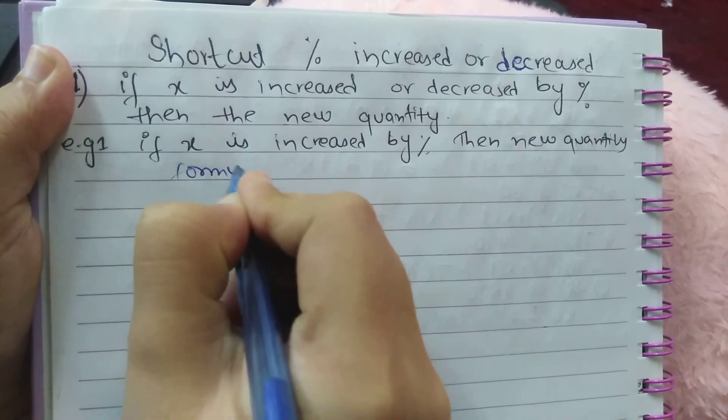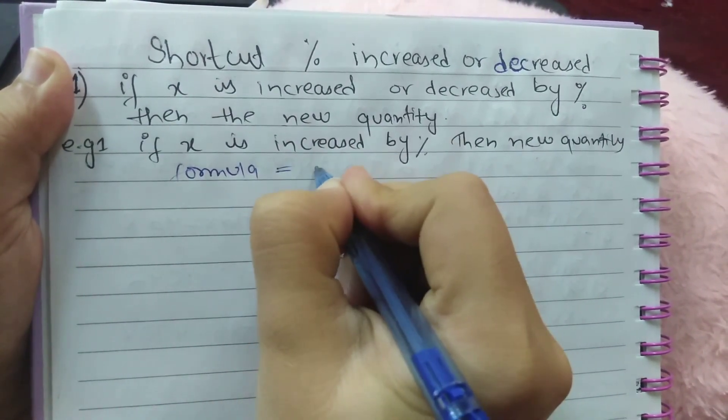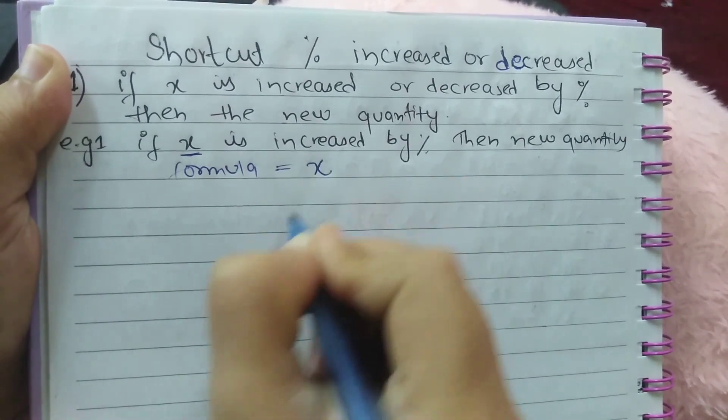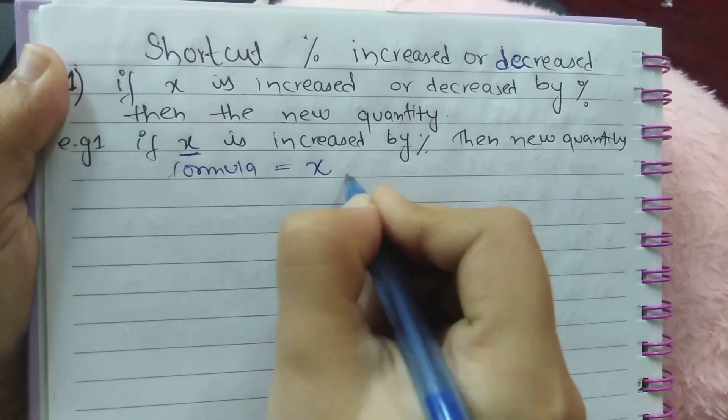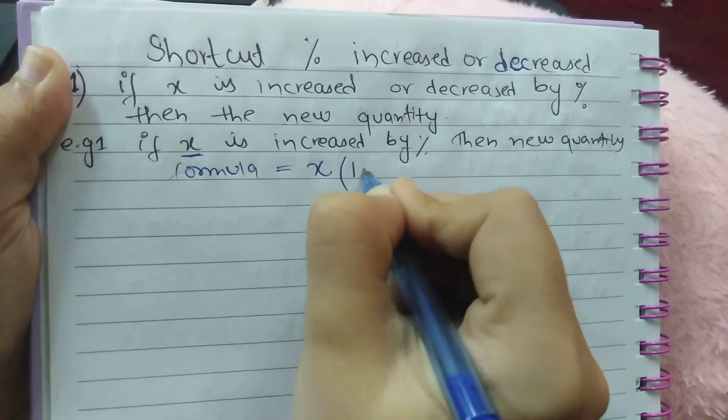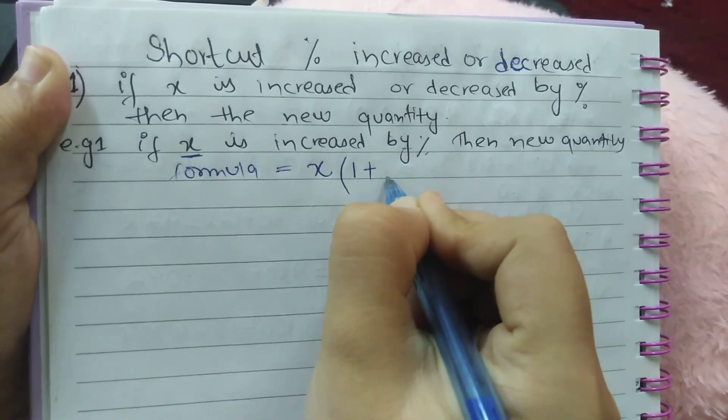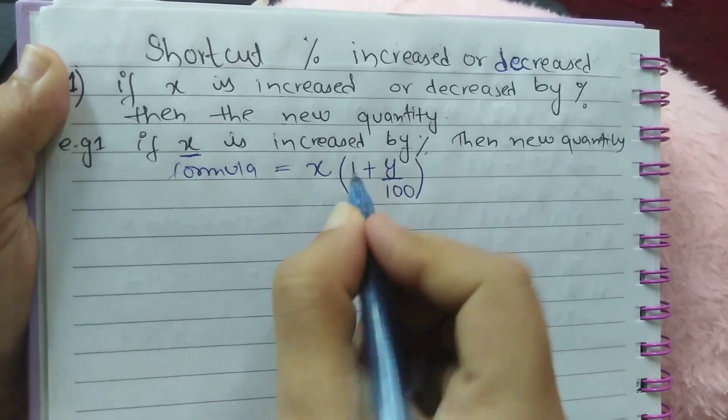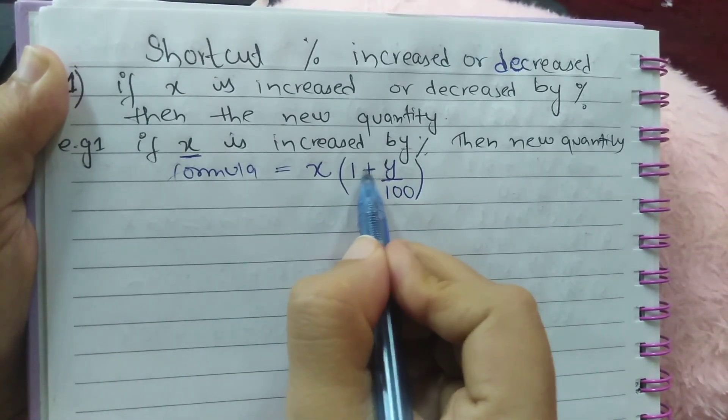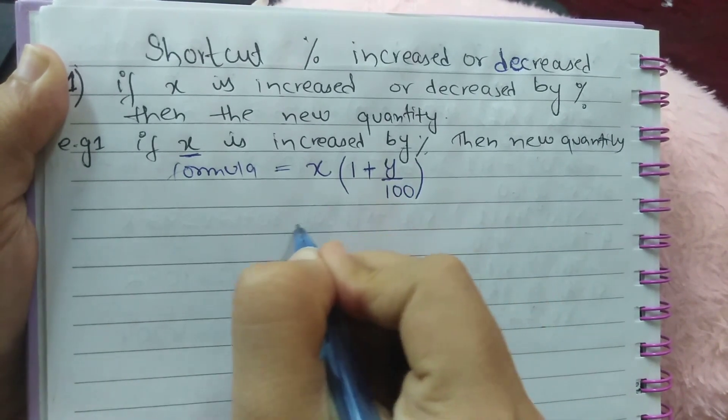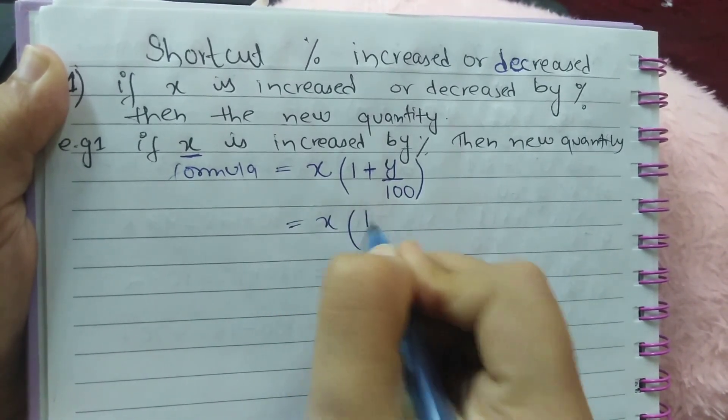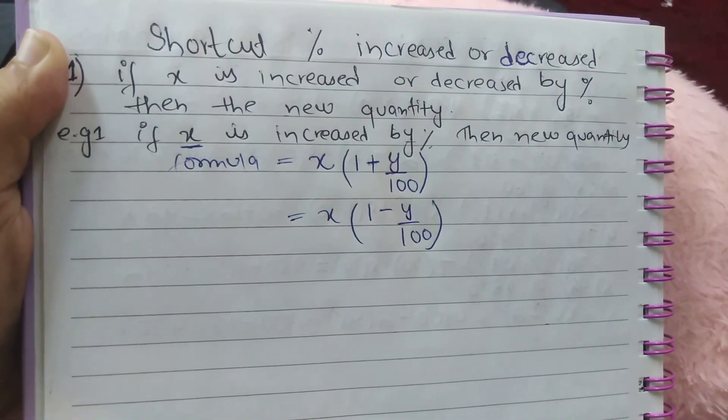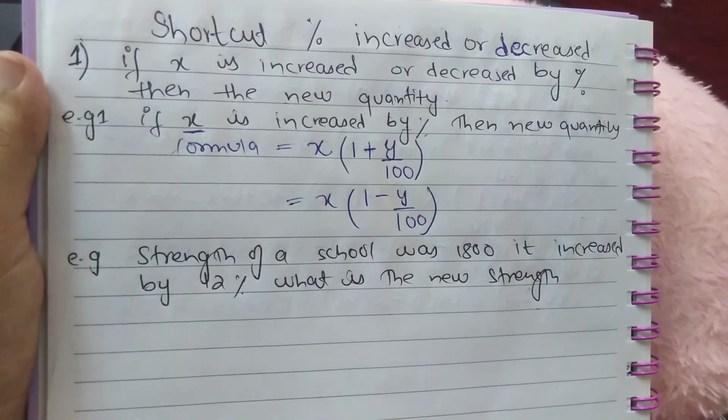So X times 1 plus the Y percent, means the second quantity, and for percent it is divided by 100. So if quantity is increased, here we will use plus sign, but if quantity is decreased, here we'll use negative sign.